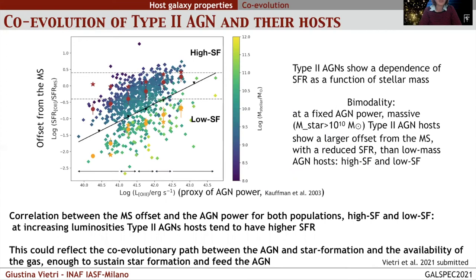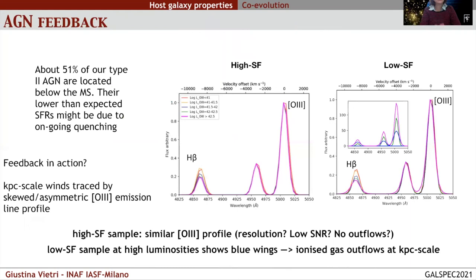We compared the offset from the main sequence with [OIII] luminosity, which can be considered a proxy of AGN power. Our data are color-coded as a function of stellar mass. Type 2 AGN show a dependence of star formation rate on stellar mass, and there is a clear bimodality with two populations: at a fixed AGN power, massive type 2 AGN hosts show a larger offset from the main sequence than low-mass AGN hosts. We call these two populations high star-forming and low star-forming. There is also a positive correlation: with increasing AGN luminosity, hosts tend to have a higher star formation rate, possibly reflecting gas availability to sustain star formation and feed the supermassive black hole.